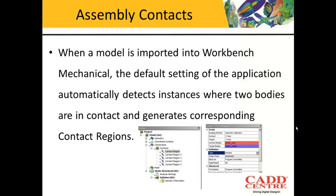Up till now we have only seen single models. Now we will understand how to deal with assembly models. Whenever we are working with assemblies, we need to define the contacts between the two components or geometries. The advantage we have in ANSYS Workbench mechanical window is that these assembly contacts are automatically defined. Wherever two bodies are in contact, a contact region is defined over there, so the user does not have to manually define the contacts. This is one of the greatest advantages we have in ANSYS Workbench.